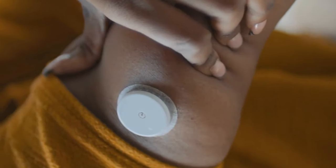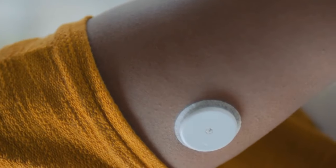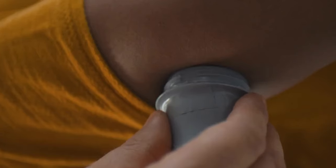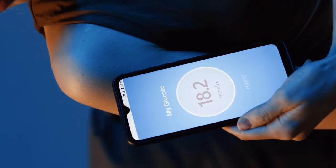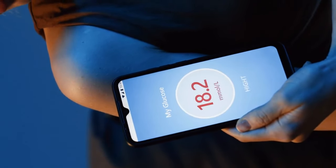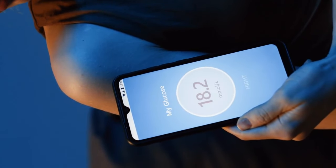It is a method for tracking glucose levels in real time throughout the day and night. It involves the use of a small sensor, typically inserted under the skin of the abdomen or arm, which measures the glucose levels in the interstitial fluid, the fluid between cells. This sensor tests glucose every few minutes and transmits the data wirelessly to a display device, such as a smartphone, smartwatch, or a dedicated receiver, allowing the user to monitor their glucose levels in almost real time.